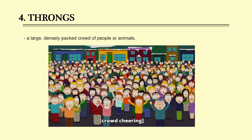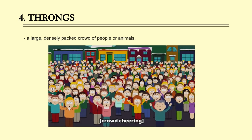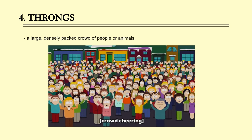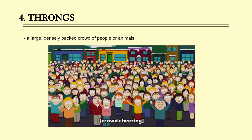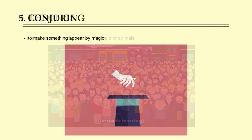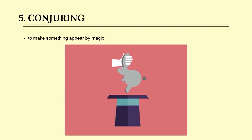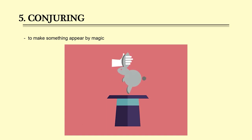Number 4: Frongs. Frongs is a large, gently-packed crowd of people or even animals. Number 5: Conjuring. You might think of the horror film, but actually conjuring means to make something appear by magic.